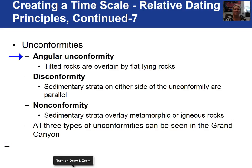The first unconformity is the easiest for students to identify. It is an angular unconformity. This is a situation where you have sedimentary rocks that are tilted, then the erosional surface — the unconformity — followed by horizontal layers of sedimentary rocks. So the entire sequence consists of sedimentary rocks.